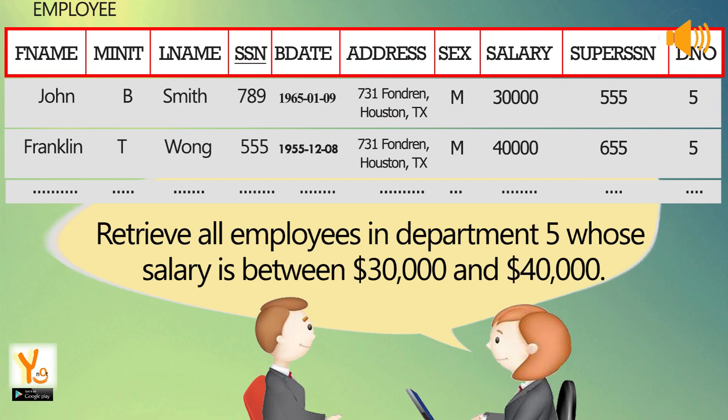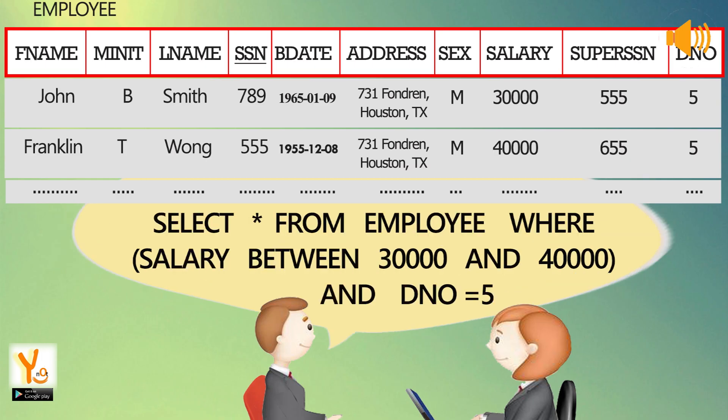Retrieve all employees in department 5 whose salary is between 30,000 and 40,000. SELECT * FROM employee WHERE salary BETWEEN 30000 AND 40000 AND Dnumber = 5.